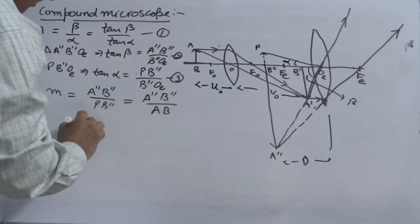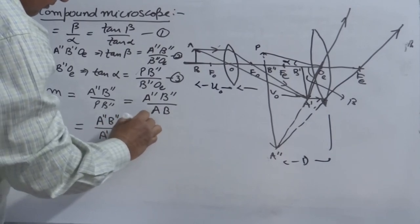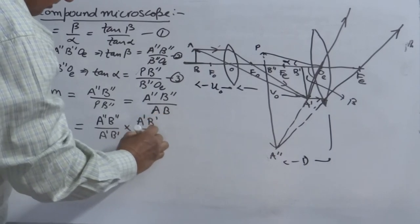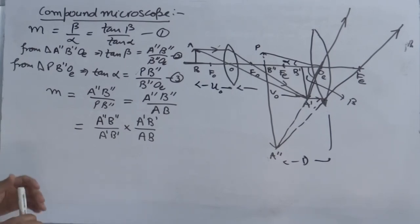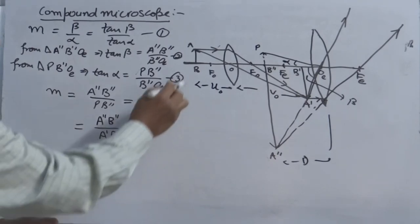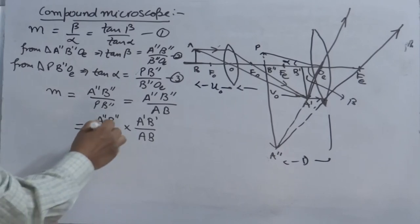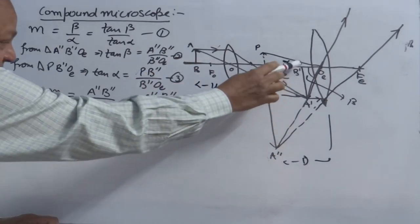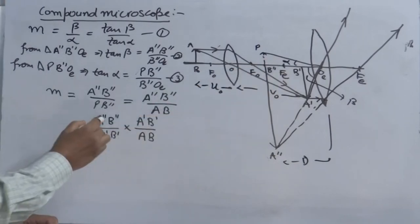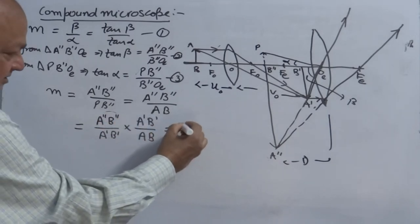We can rewrite this by multiplying and dividing by A'B': M equals (A''B'' / A'B') times (A'B' / AB). Here AB is the height of the object and A'B' is the height of the image formed by the objective lens — so the first factor is the magnifying power of the objective lens. A'B' serves as object for the eyepiece lens and A''B'' is the final image, so the second factor is the magnifying power of the eyepiece lens.